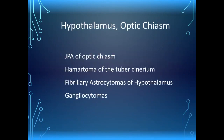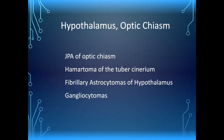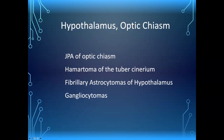Now the parasellar lesions — the thalamus and optic chiasm — because these can also affect endocrinology by affecting the hypothalamus, which provides releasing hormones and posterior pituitary secretions. Things that occur around here include JPA of the optic chiasm — juvenile pilocytic astrocytoma — often associated with neurofibromatosis type one, and they can invade the hypothalamus and tend to be very infiltrated. Then there's the very well-behaved hamartoma of the tuber cinereum, and more infiltrated fibrillary astrocytomas of the hypothalamus, and rarely gangliocytomas in that area.